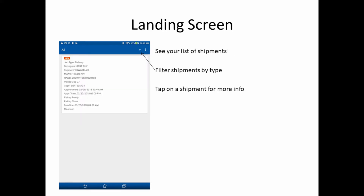Once you're logged in, you'll be brought to the landing screen where you see a list of your shipments. You can filter the list by type of shipment by tapping on the three horizontal lines in the upper right corner. To get more information about a shipment, simply tap on it.